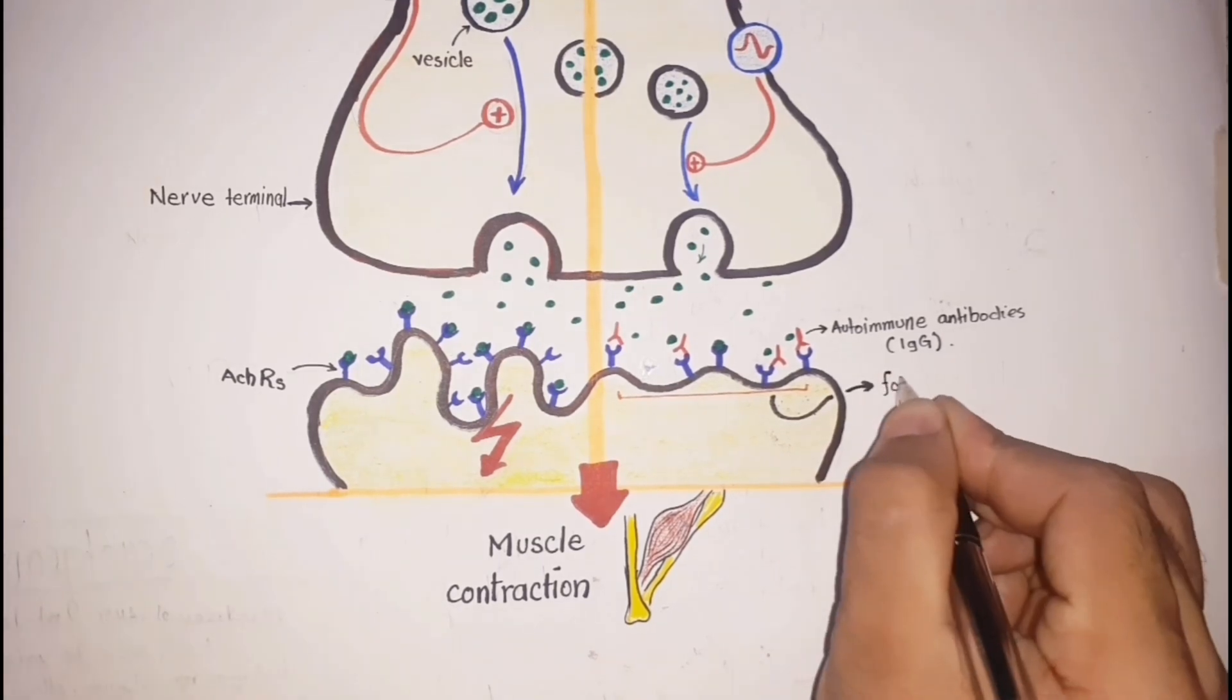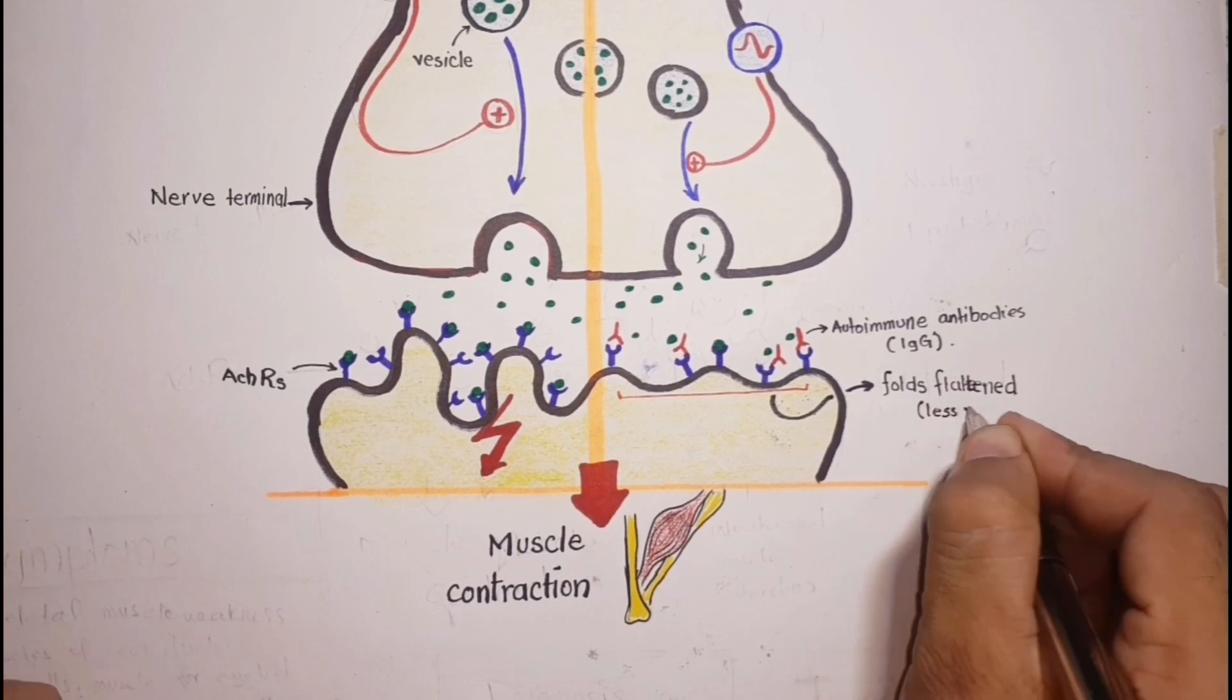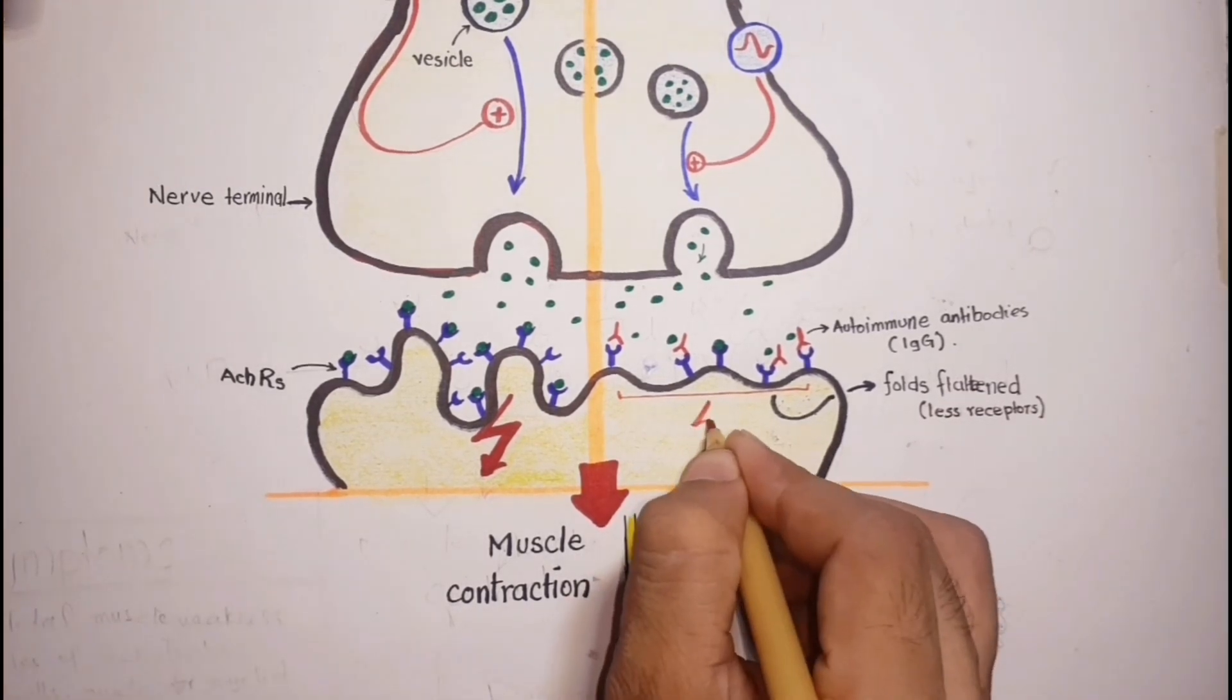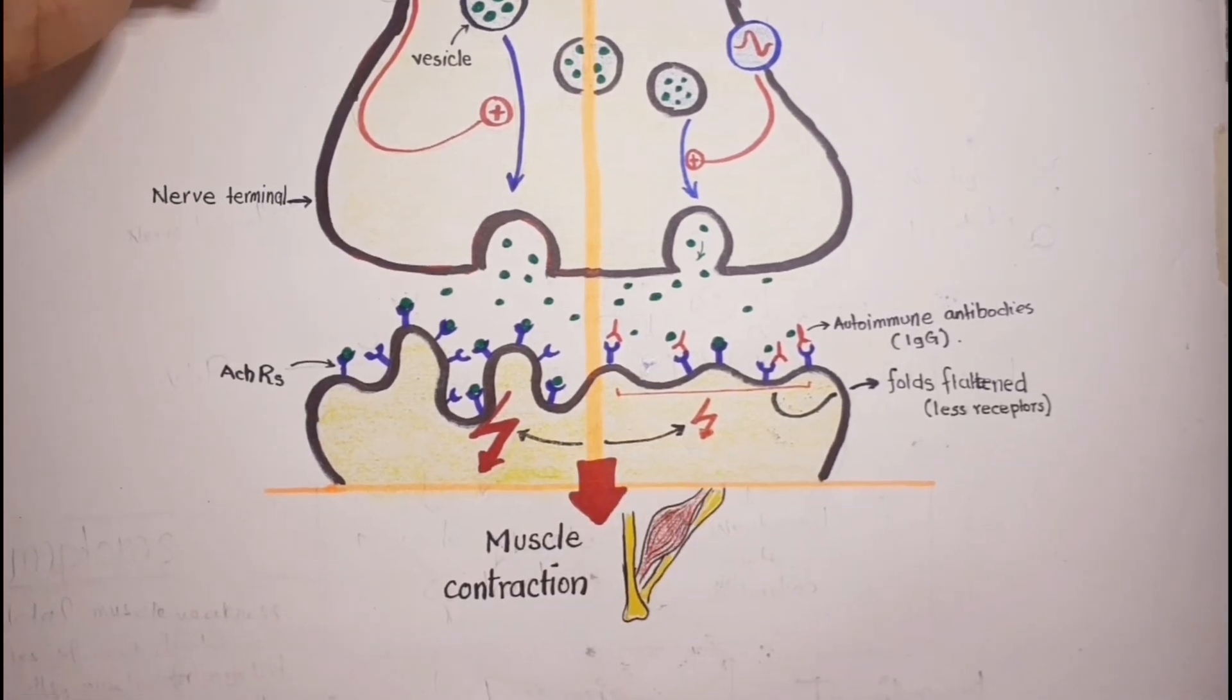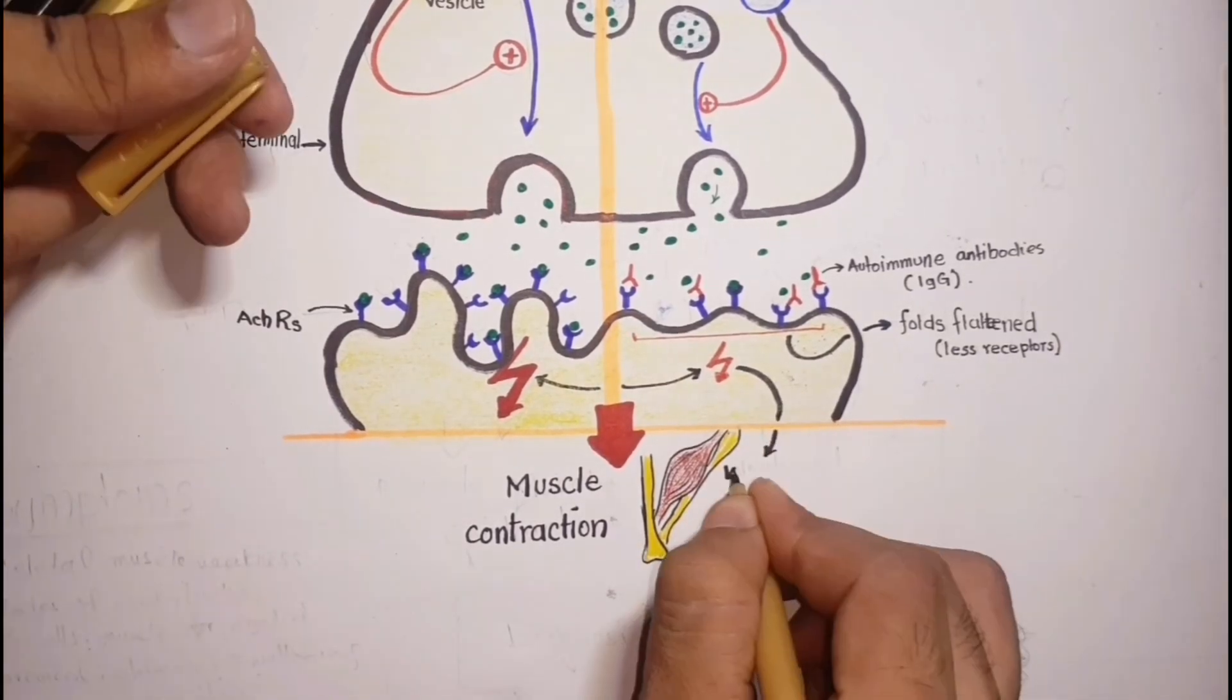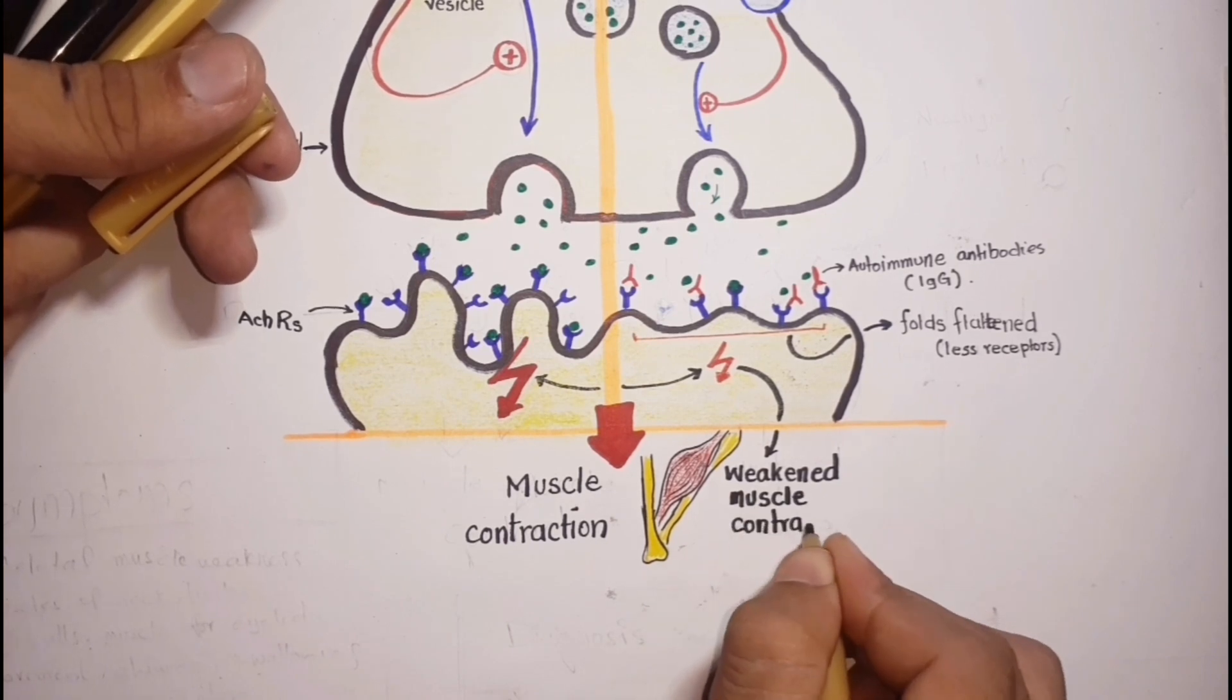In addition, the post-synaptic site is damaged and the folds are flattened. These changes result in decreased neuromuscular transmission leading to failure to trigger muscle action potential and consequent weakened muscle contraction.